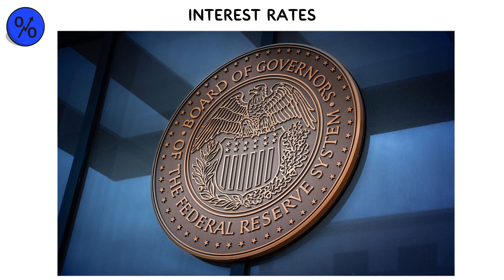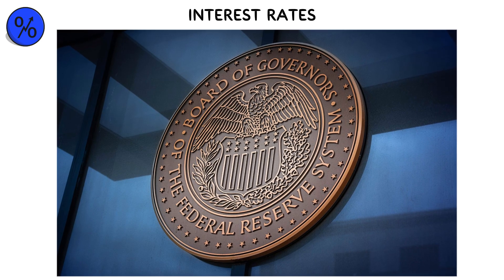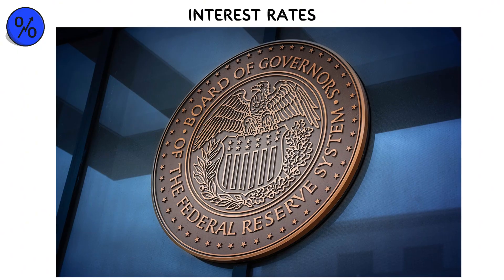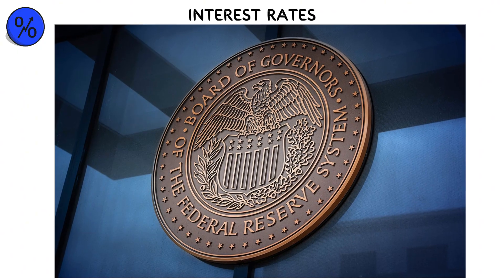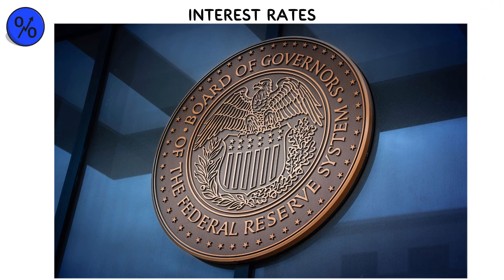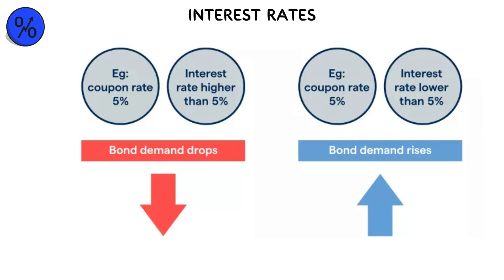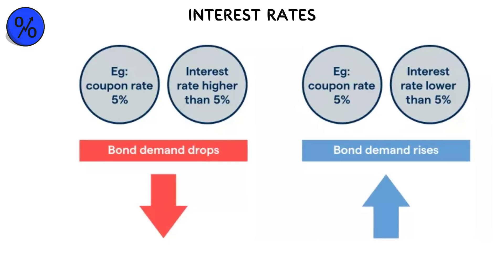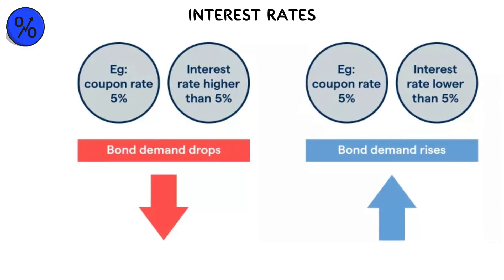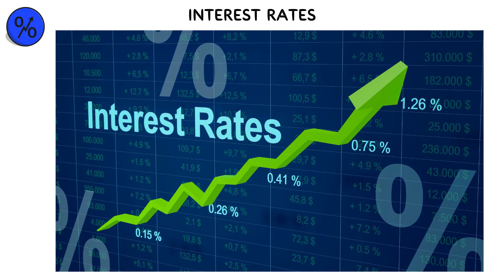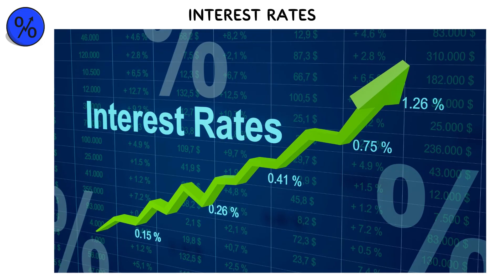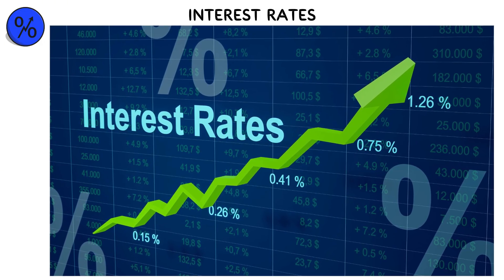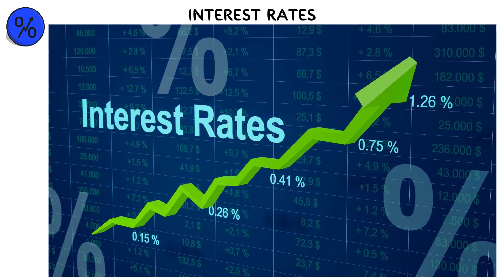Central banks, such as the Federal Reserve, adjust benchmark interest rates to manage inflation and stimulate or slow down economic growth. Lower rates encourage borrowing and spending, while higher rates curb inflation but can cool the economy. Because they shape financial behavior and market confidence, interest rates are among the most powerful tools in economics.